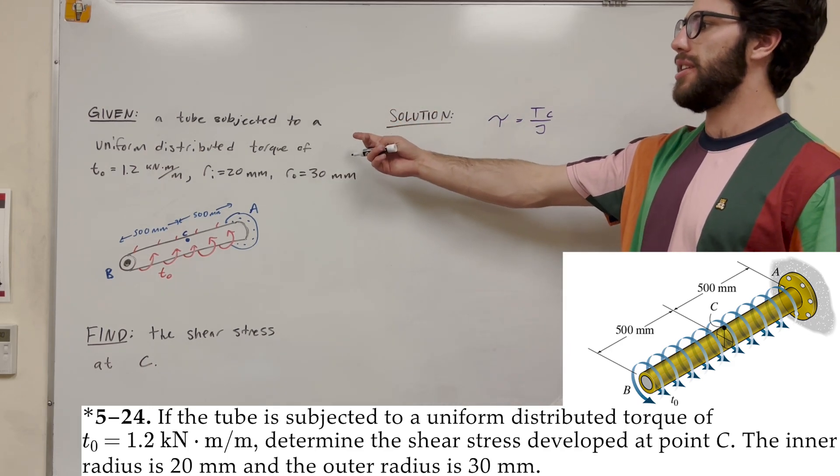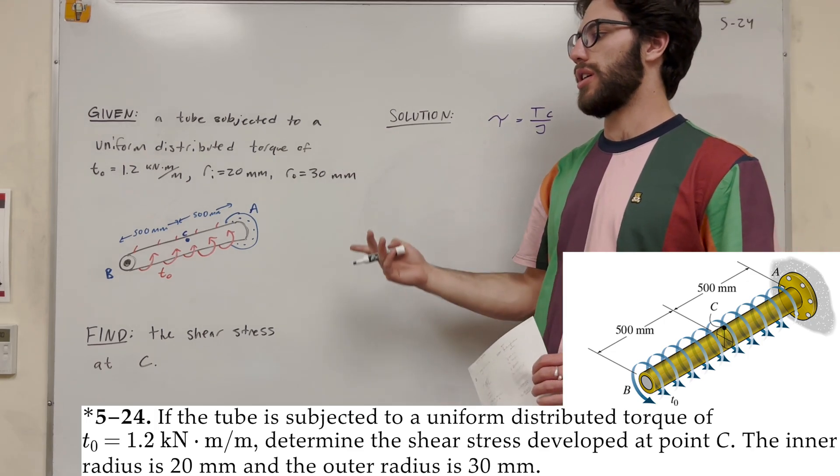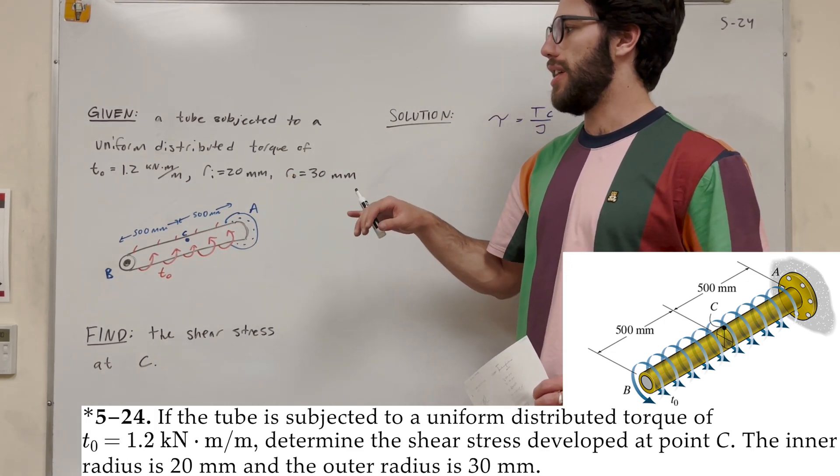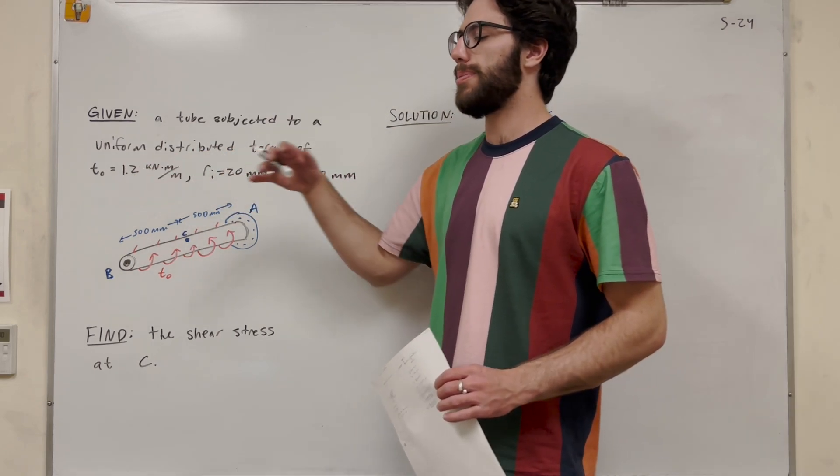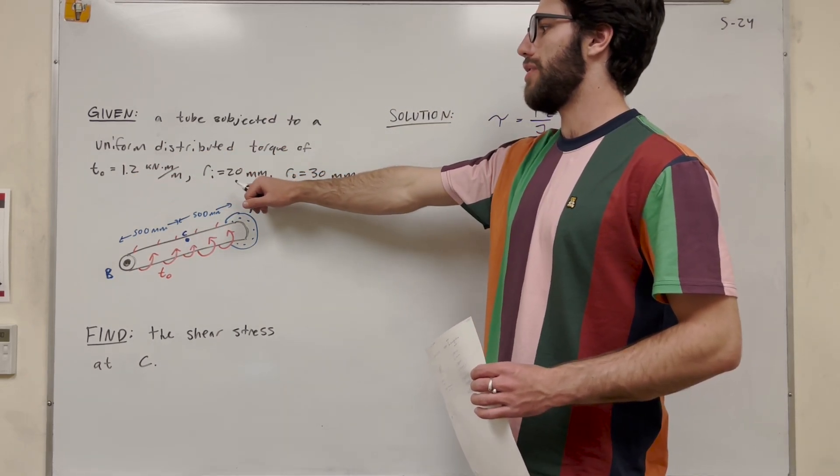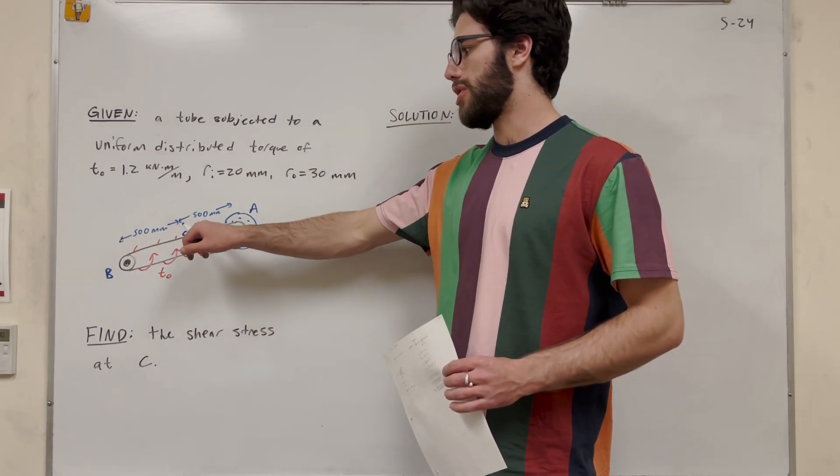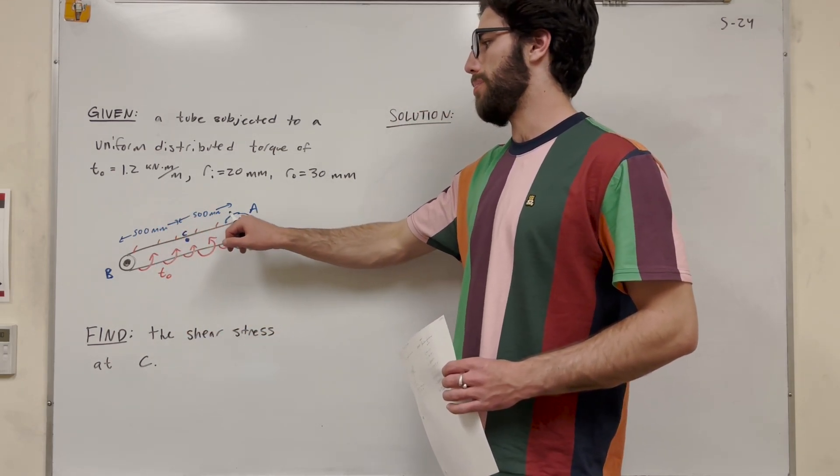So we have a tube that's being subjected to uniform distributed torque across the entire beam. That's 1.2 kilonewton meters per meter. So it's also a tube, so it has an inner radius and an outer radius. And our goal is to find the shear stress at point C, which lies halfway of the 1 meter long tube.